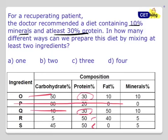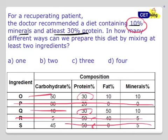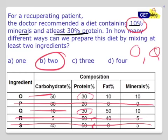You have 4 options left. And 10% minerals — so R with 5% minerals is out, and S with 5% minerals is out. So how many options are left? 2 options: O and Q. Again, a very simple question.